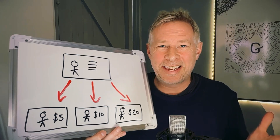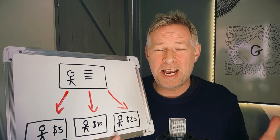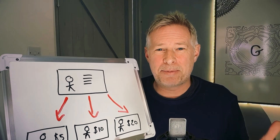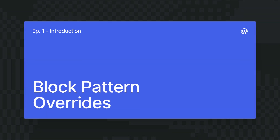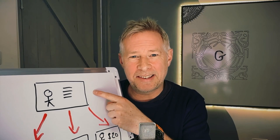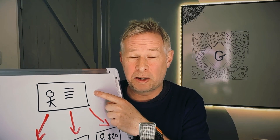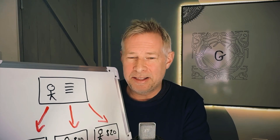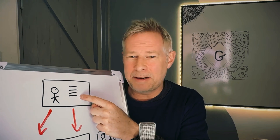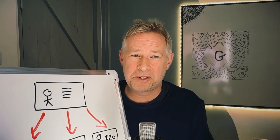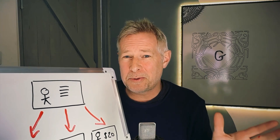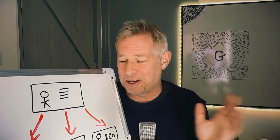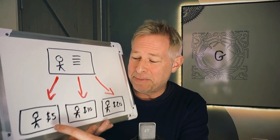Next up is what I think is one of the most important changes to ever happen to WordPress, and those are block pattern overrides. Let me explain. At the moment, what you can do with block patterns is you can create a central design, create it once, and then use that same design on a thousand pages if you want to. And what you can do with block patterns, which is really cool, is you can make changes.